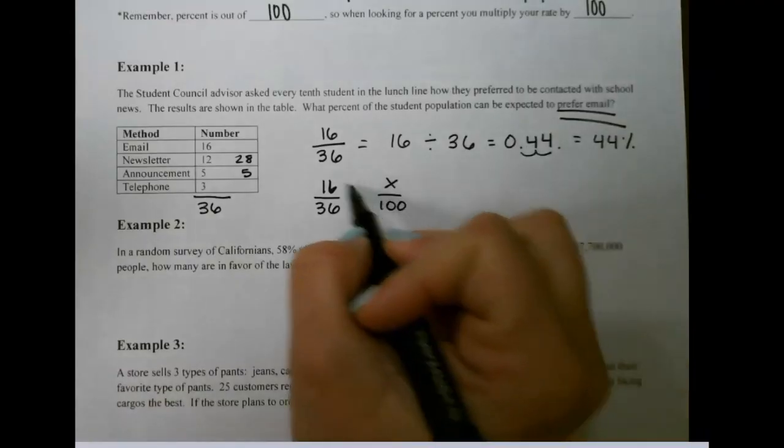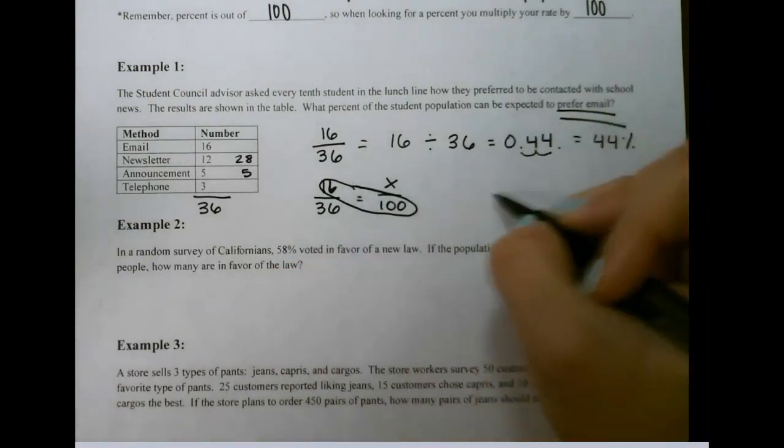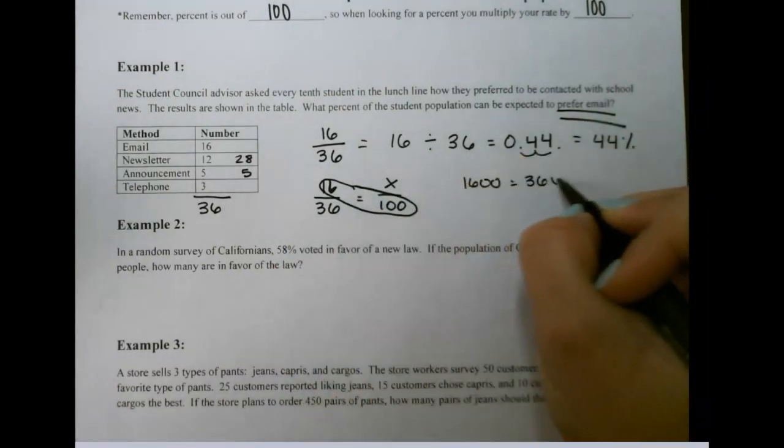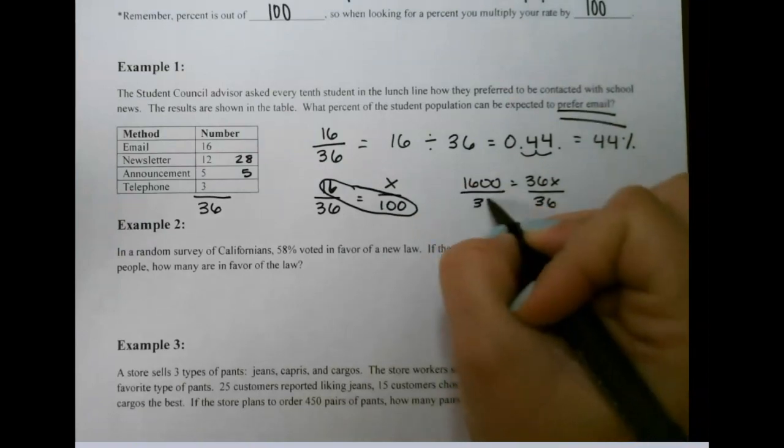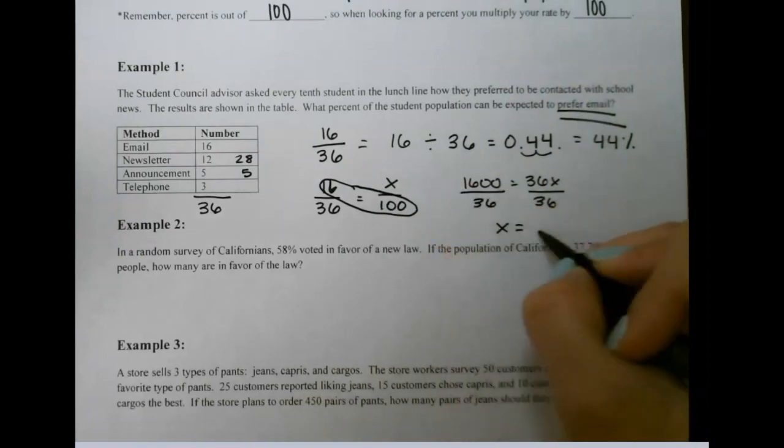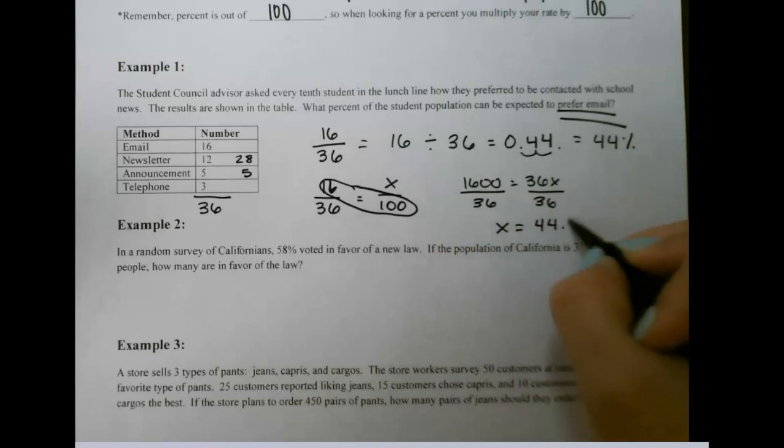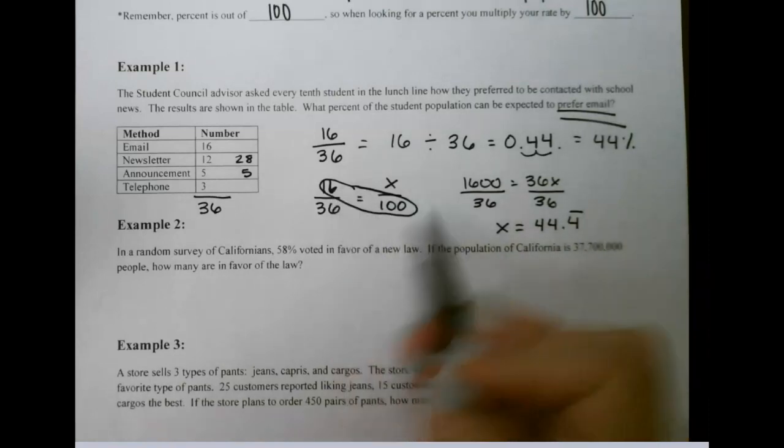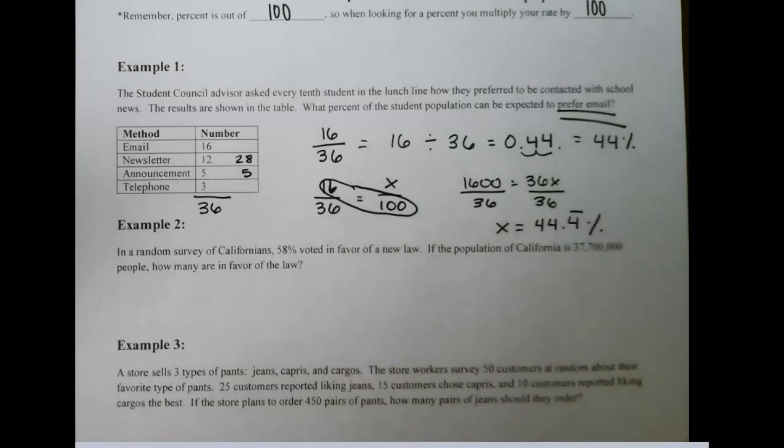For this method, we cross multiply, which gives us 1,600 equals 36x. Then we divide by 36. That gives us 44.4 repeating. We don't have to change this because it's already in percent form since we used the proportion. Both methods give us about 44%.